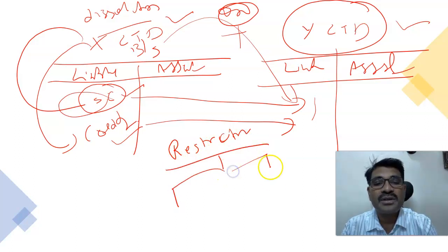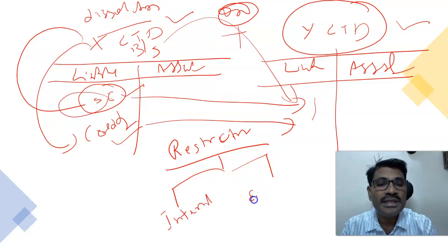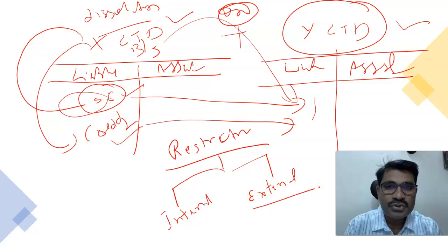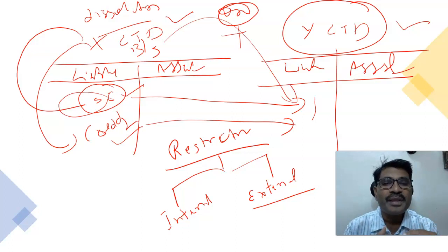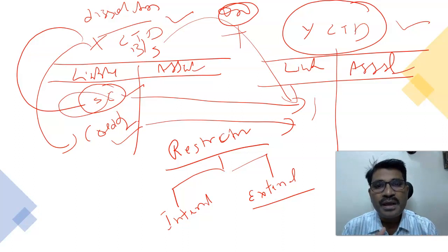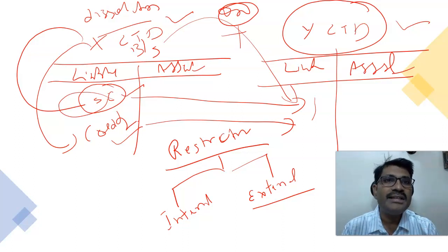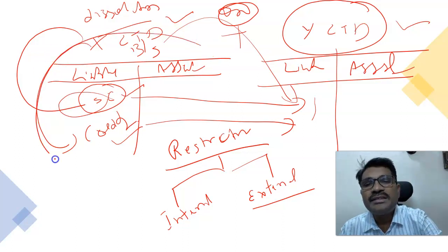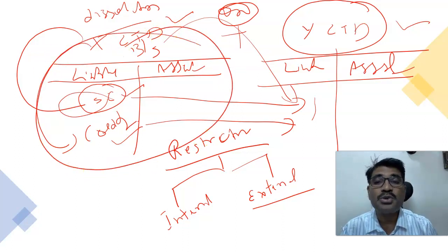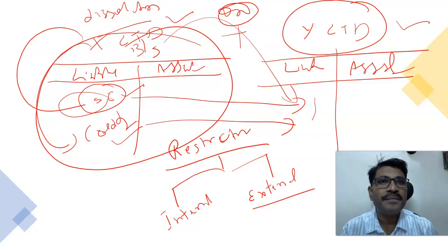We also call this subject external reconstruction or external restructuring, or sometimes internal reconstruction of companies. Another terminology used is 'corporate debt restructuring.' Restructuring means there is some structure being changed — the structure of a company is its balance sheet. If something is going to change on the balance sheet — where the company may transfer its assets and liabilities, its business to another company, or both may exist together, or create a new joint venture — this is restructuring.